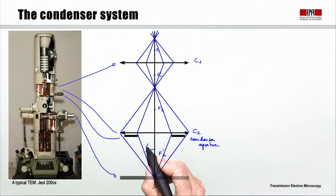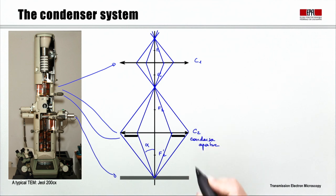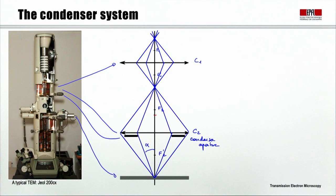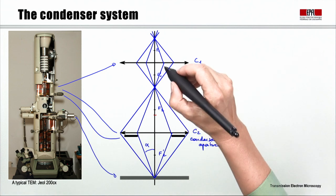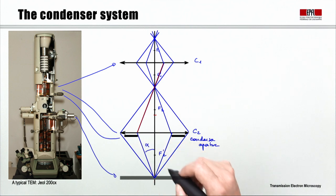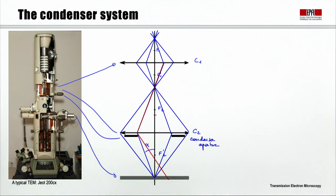The maximal angle illuminating the specimen is called the illumination semi-angle alpha. If I change the excitation of the C2 lens, I change the position of the focal point and therefore the position at which the crossover is formed. For example, if I increase the strength, the focal point moves closer to the lens, and the crossover will form earlier — the lens will be in over-focus, with the crossover before the specimen.